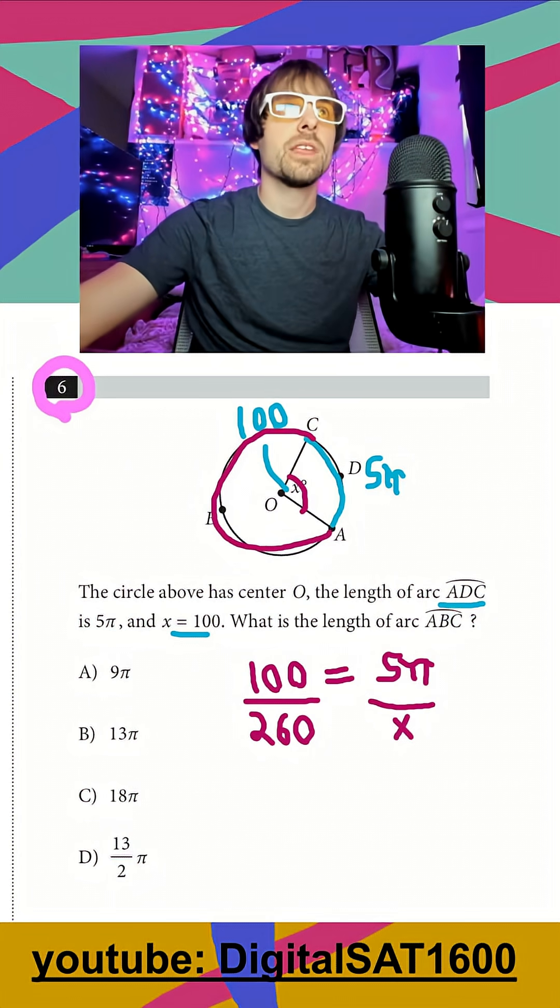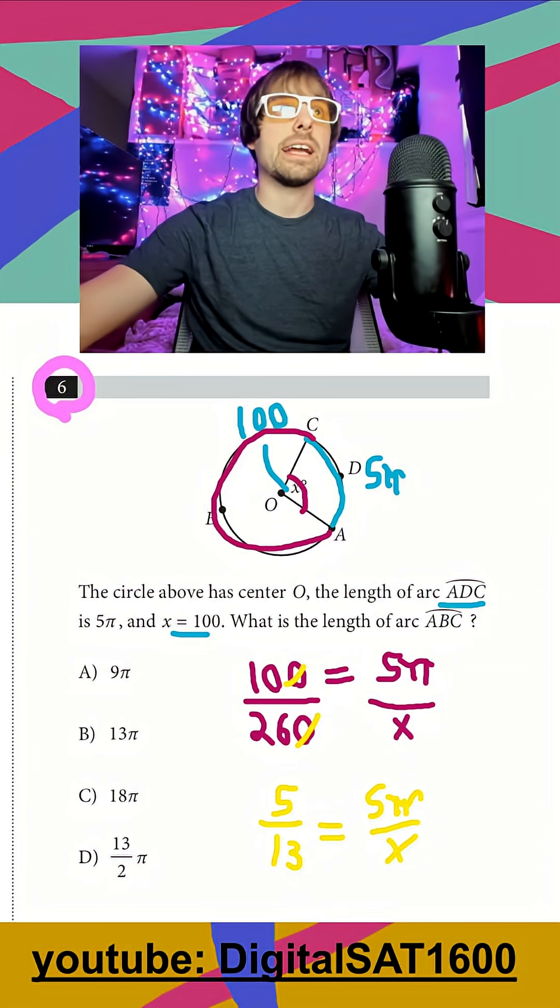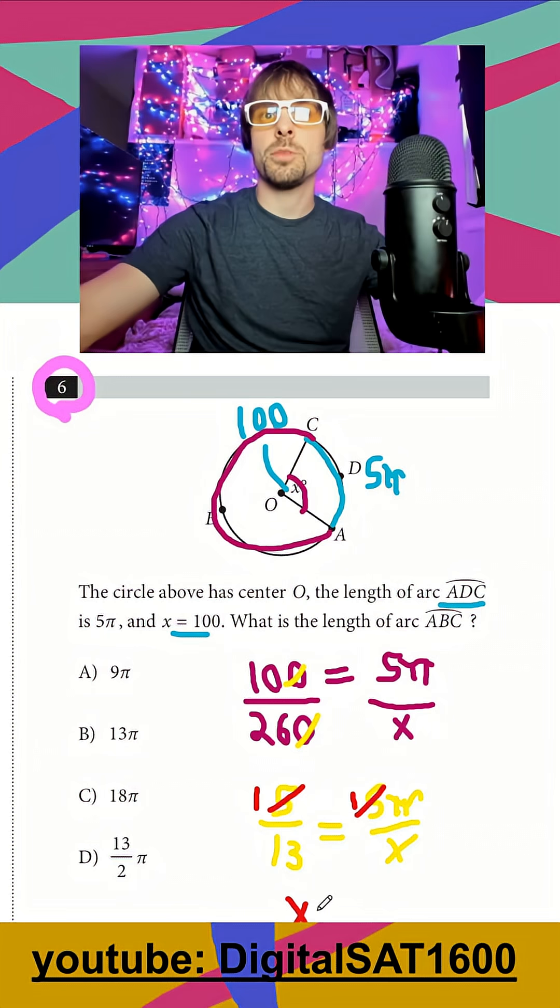So we can do some reducing here. Get rid of a zero, a zero, divide by two, so I get 5 over 13 is equal to 5π over x. I can divide both sides by five, and that makes this one, that makes this one. And finally I cross multiply and I get x is equal to 13π, or B.